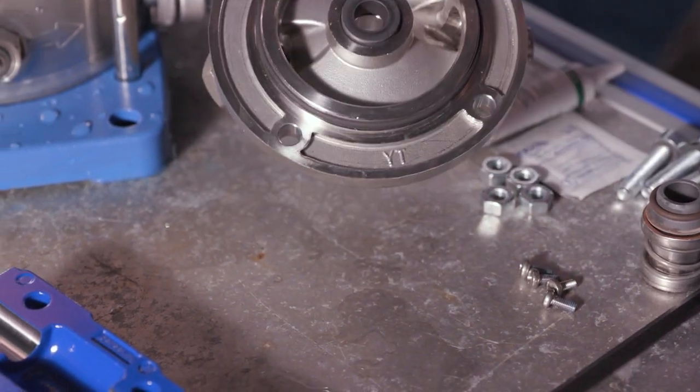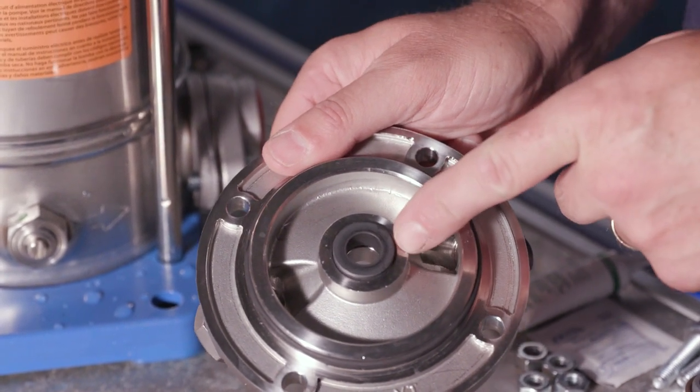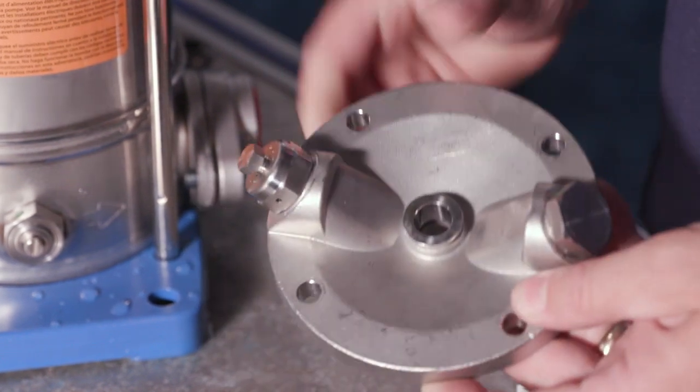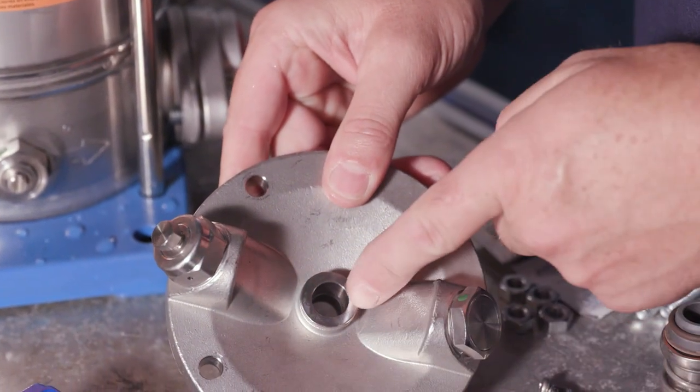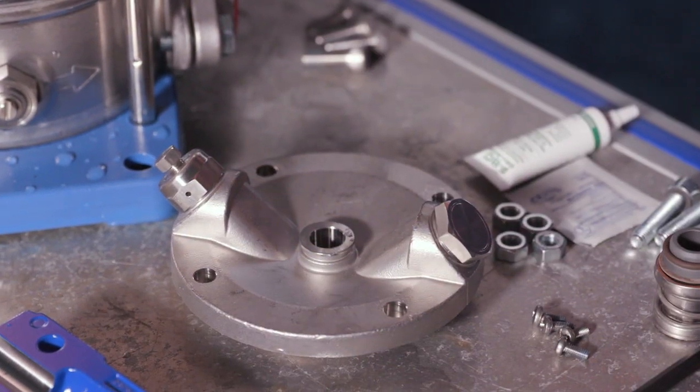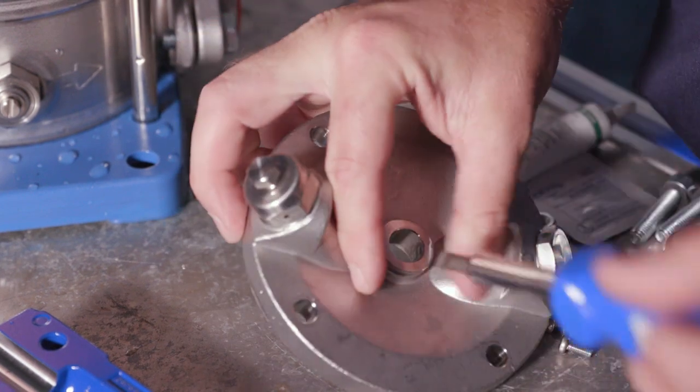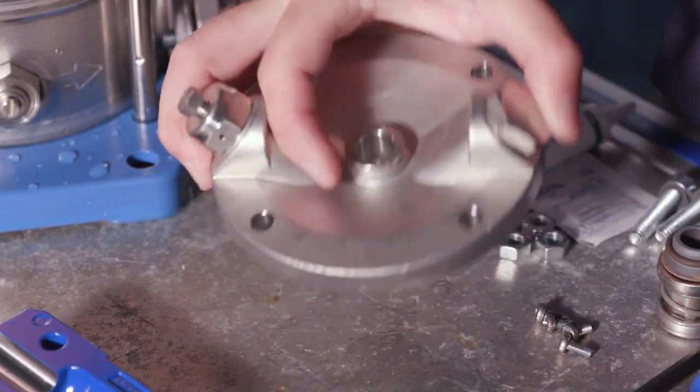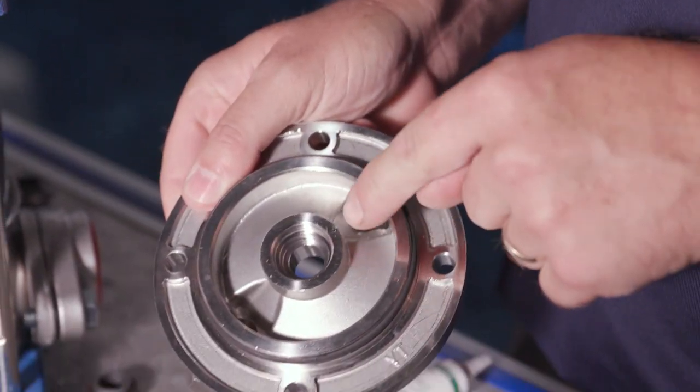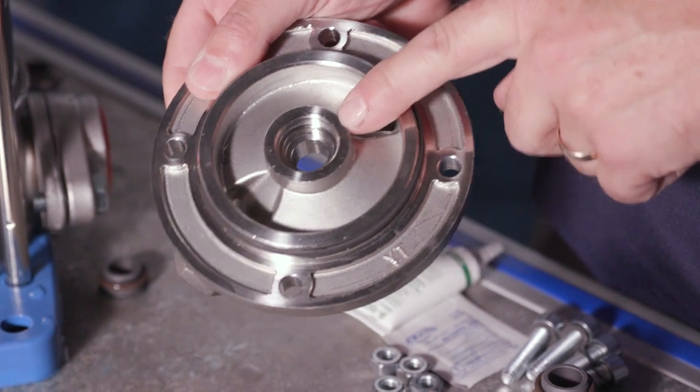We're going to install a new mechanical seal. The first thing that you want to do, notice that we didn't pop out that old mechanical seal stationary face. Easiest way to do that is just flip that over and pop that out from the back side. Now that we've got that popped out, we're going to install the stationary portion of the seal.